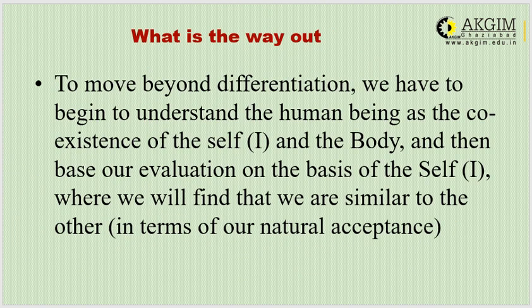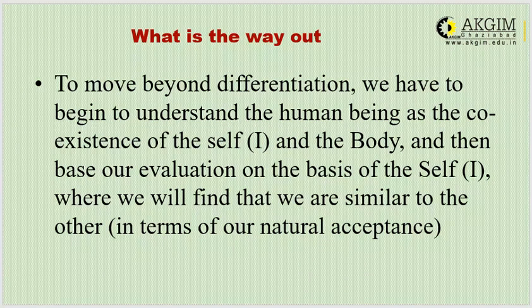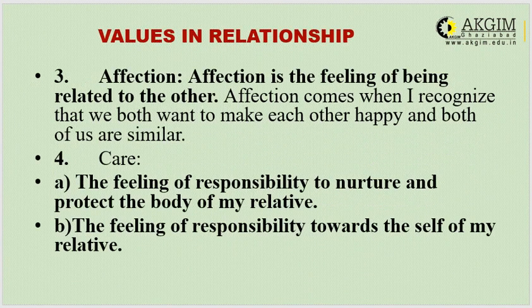The way out is to move beyond differentiation. We have to begin to understand that a human being is a coexistence of the self and the body, and base our evaluation on the self, where we will find that we are similar to the other in terms of our natural acceptance. The third value in relationship is affection. Affection is the feeling of being related to the other — it comes when I recognize that we both want to make each other happy and that we are similar.